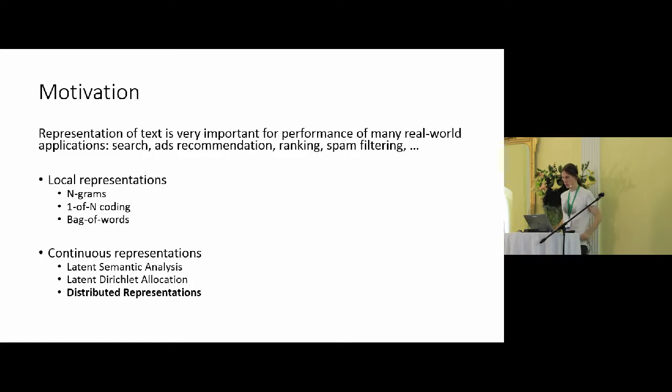So, two main groups of the representations are either the local representations or the continuous representations. For the local ones, there are these well-known n-grams, bag of words or bag of n-grams representations. The basic concept is this one-hot encoding, which means that we build a dictionary of words from the text that we are using and then we encode each word as basically a vector that is orthogonal to other words. So, that's the one-hot encoding.